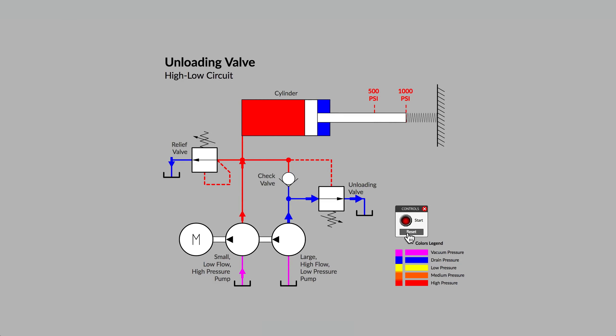It is not uncommon to find an unloading valve in use with fixed displacement pumps. An unloading valve can be used to create what is sometimes known as a high-low circuit, and it is also used to minimize the power required from the prime mover, an electric motor in this case, when the system pressure gets to a level that might cause the motor to stall.